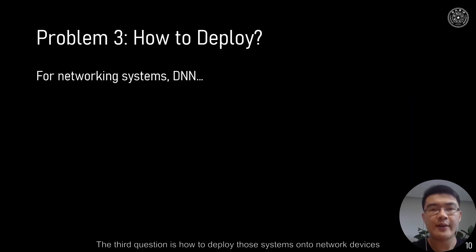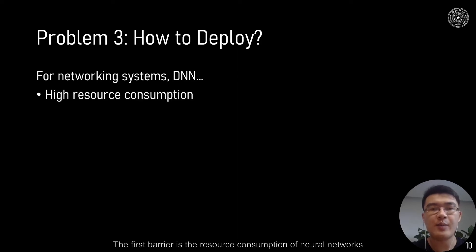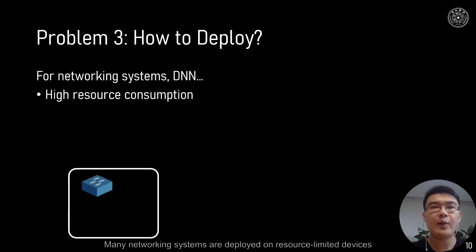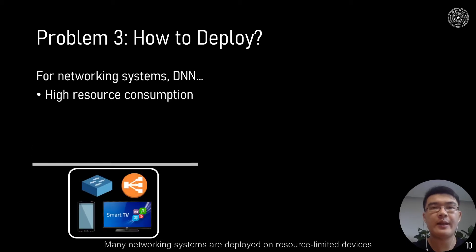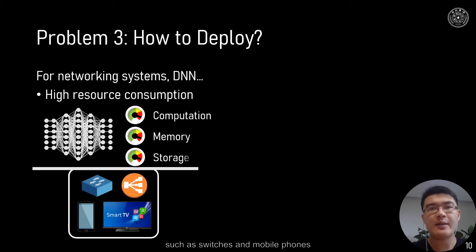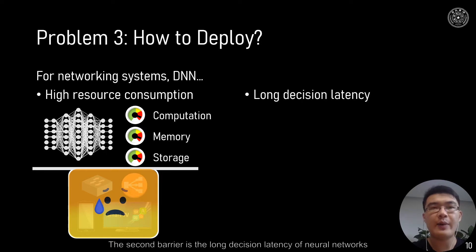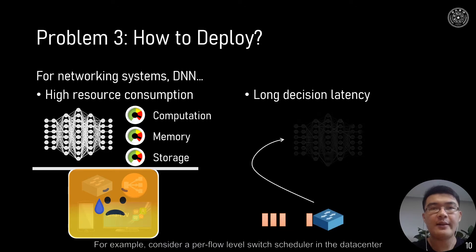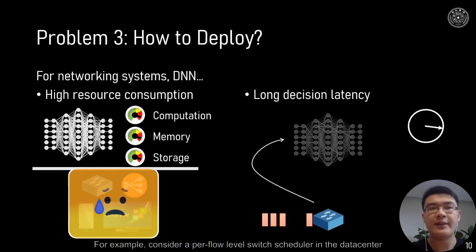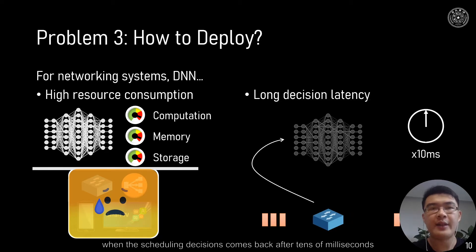The third question is how to deploy those systems onto network devices. The first barrier is resource consumption: many networking systems are deployed on resource-limited devices such as switches and mobile phones, and the computational ability, memory, and storage of network devices do not match the needs of deep learning. The second barrier is the long decision latency of neural networks. For example, consider a per-flow-level switch scheduler in the data center.